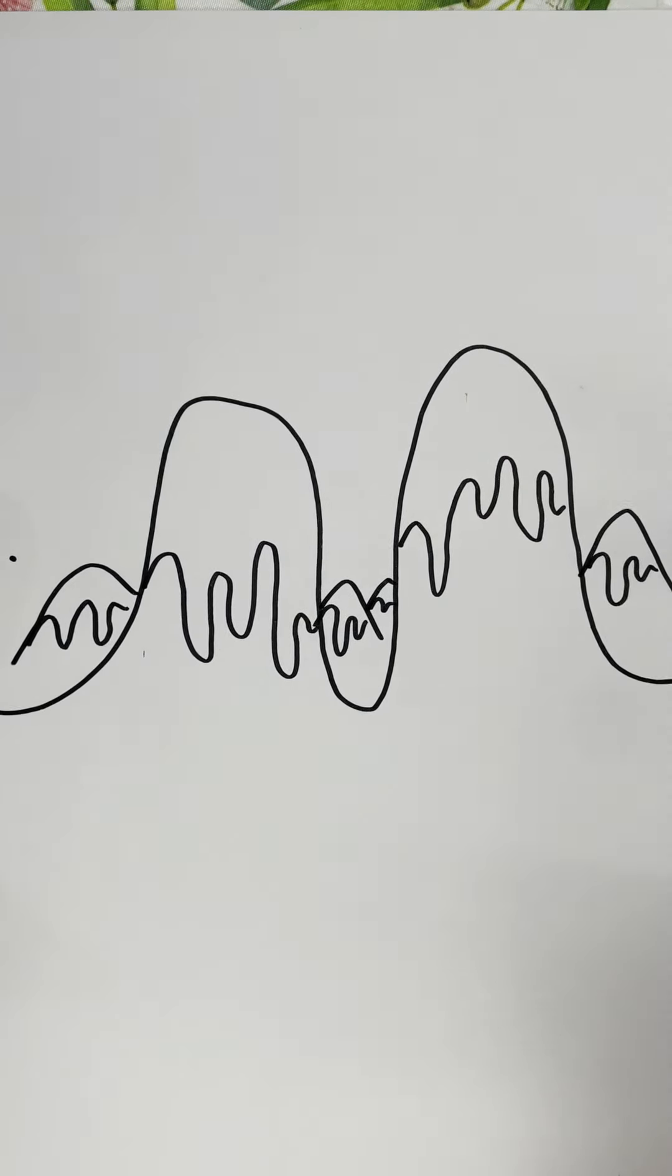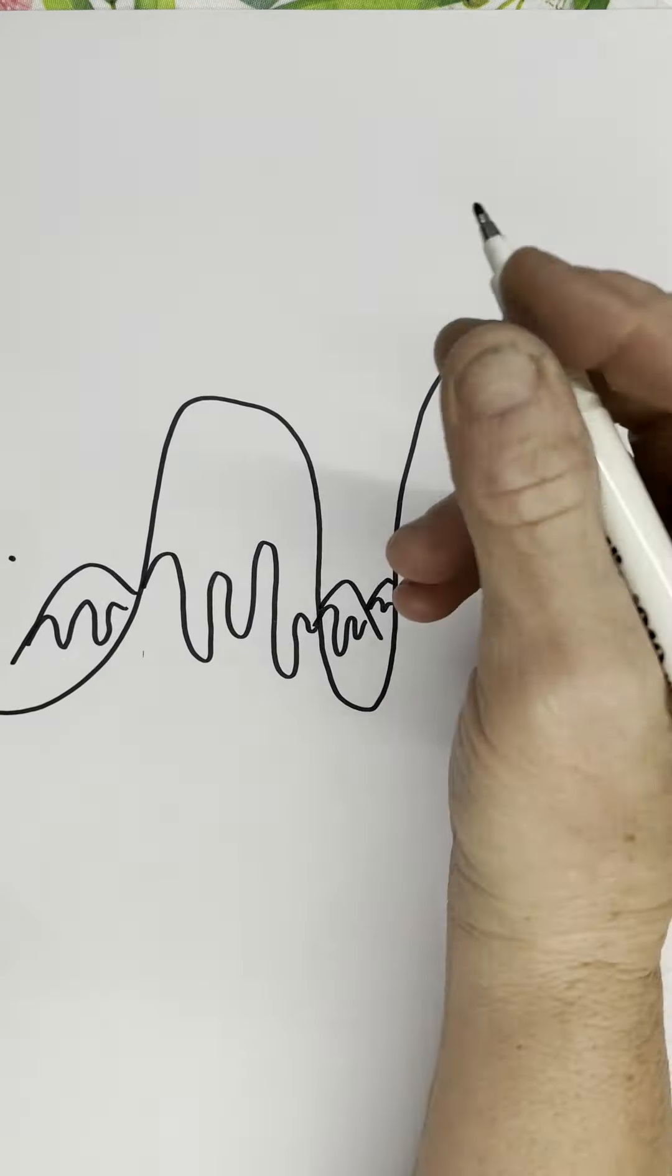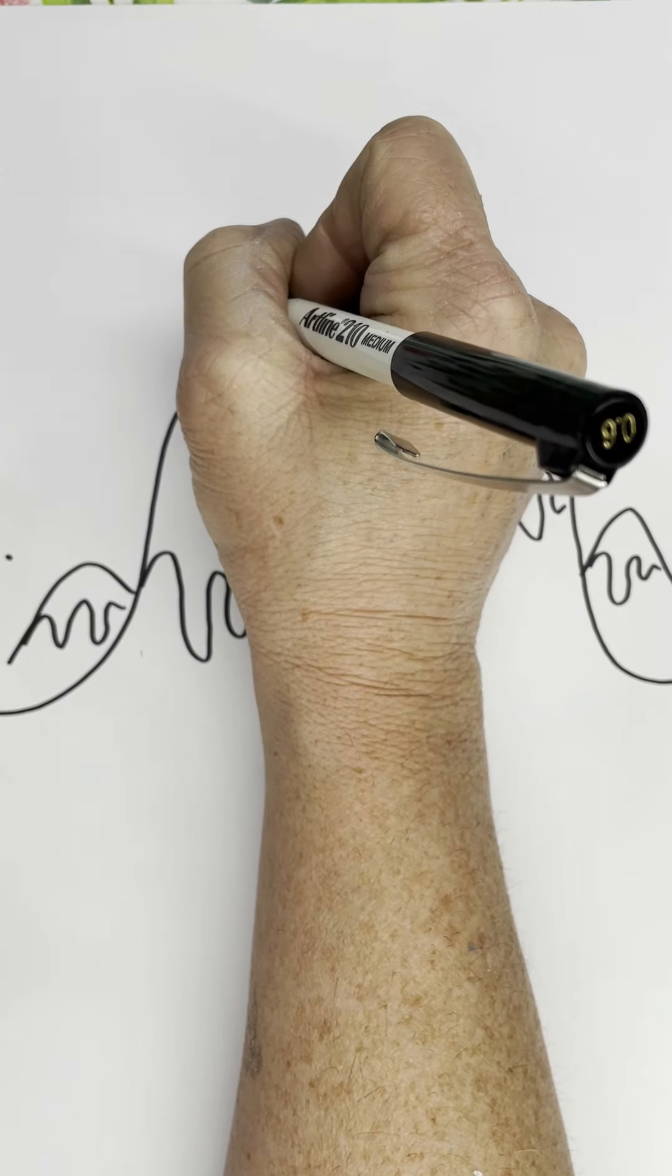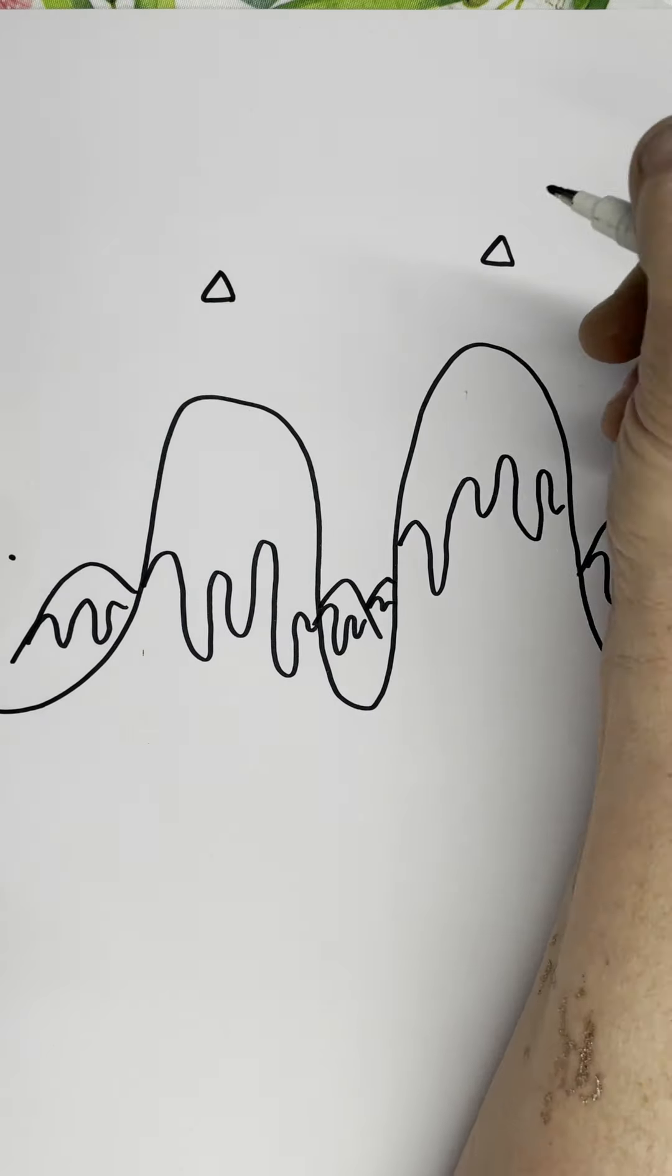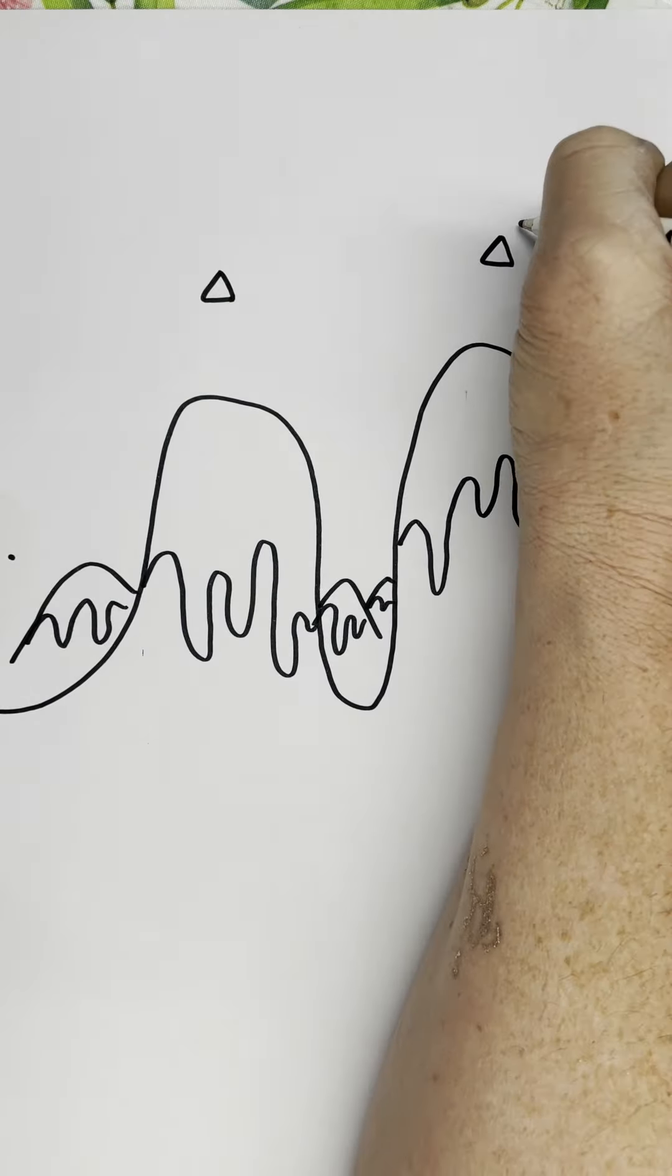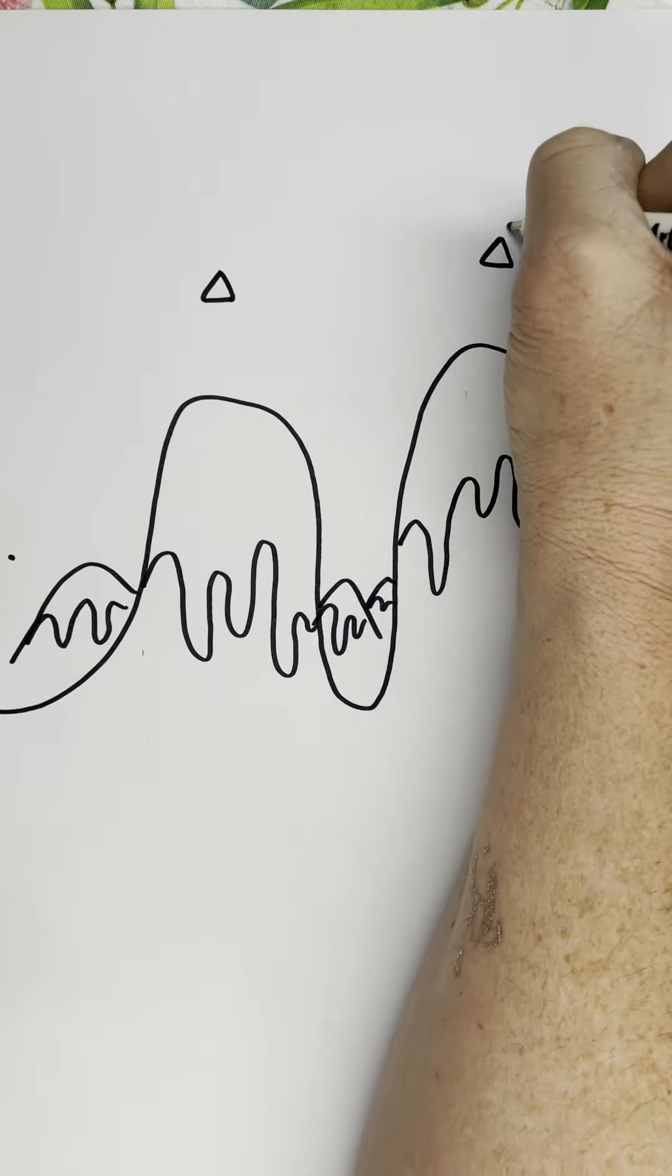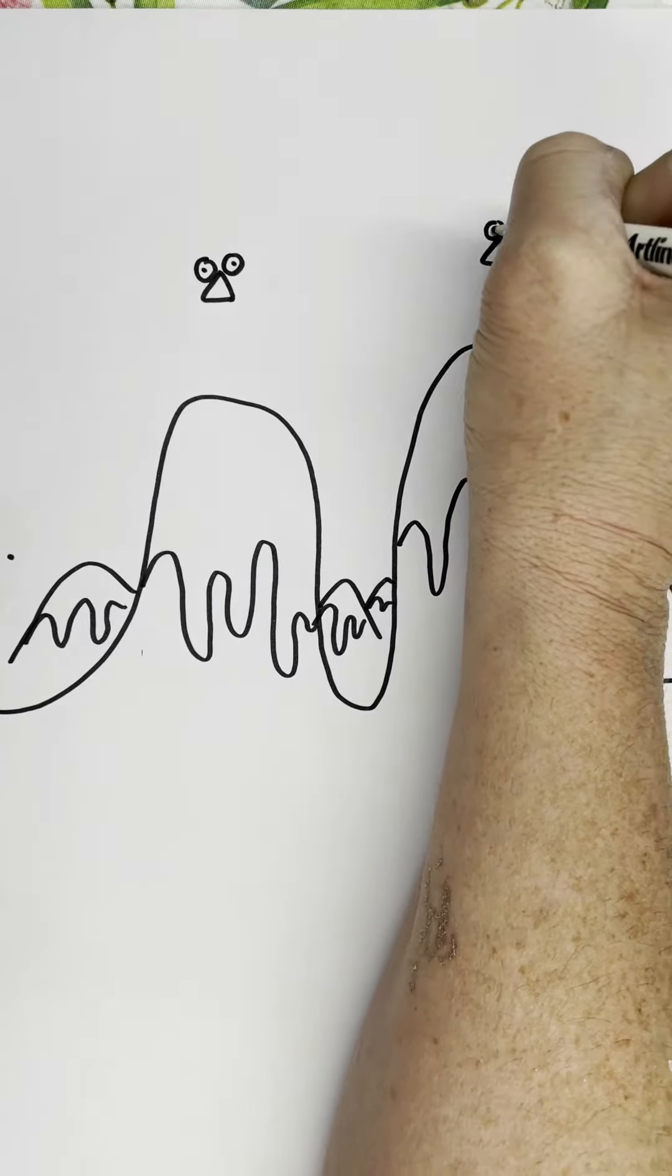So up here above your two mountains, we're going to start off a little bit above and I want you to do a triangle floating above each of the mountains. We're going to make them look pretty similar. Up the top of those triangles we're going to do a small circle either side and then I want you to put a dot inside the circles.